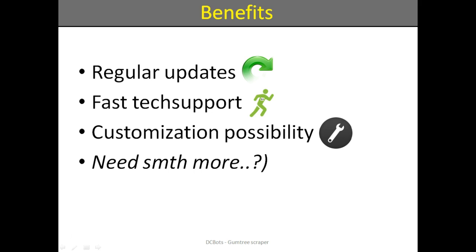You get the following benefits using our solution for Gumtree extraction. Firstly, regular updates — it is especially essential for Gumtree, because this website can change the HTML code structure and the data delivery mechanism. With our license, you get these updates for free. Secondly, fast tech support — you can send us any requests and see it is really fast. Next, our solution implies the possibility of customization, that is a refinement for your specific tasks under your business processes.